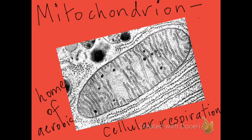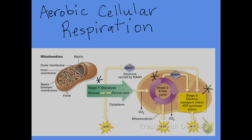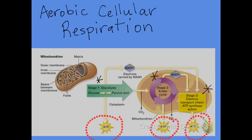Here's a diagram of one mitochondrion — mitochondrion is singular for mitochondria. Mitochondria are the home of aerobic cellular respiration, and oxygen is needed for it to be aerobic. Aerobic cellular respiration starts in the cytoplasm and, with oxygen present, continues in the mitochondria. The first stage is glycolysis, the second is the Krebs cycle, and the third is the electron transport chain. At each stage, ATP is made — a total of 36 ATP are produced from one molecule of glucose in aerobic respiration.